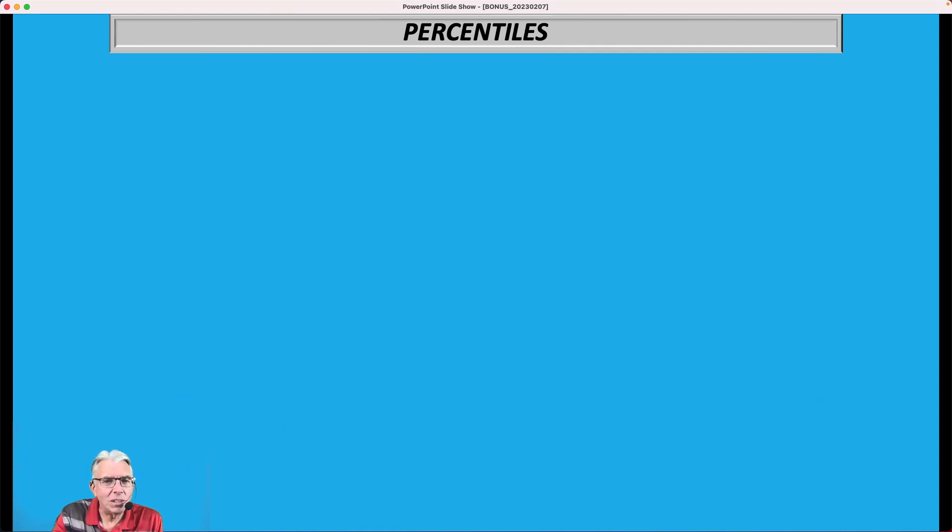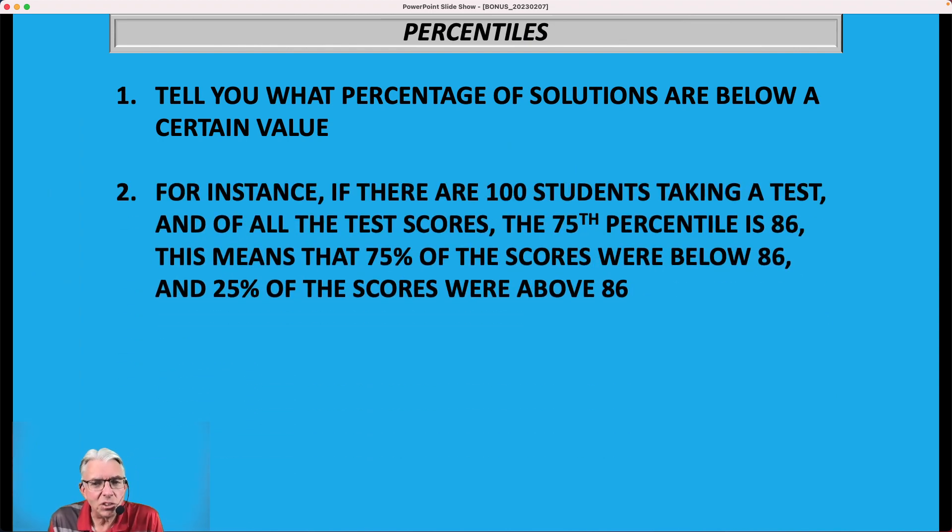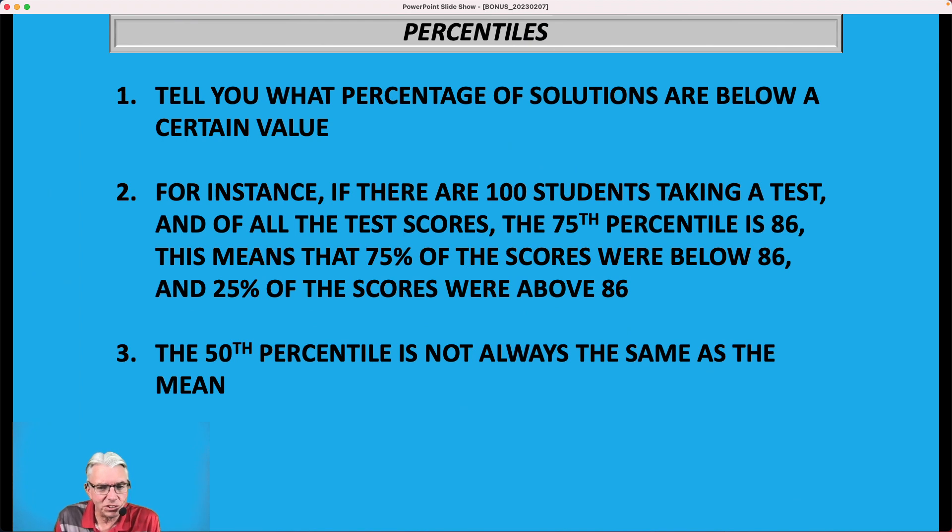Now the last thing I want to talk about is percentiles. Basically what this does is tell you what percentage of the solutions or the scores, if you will, are below a certain value. So let's say for instance there are 100 students taking a test, and out of all the test scores, the 75th percentile is 86. That means that 75 percent of the scores were below 86, and 25 percent of the scores were above 86.